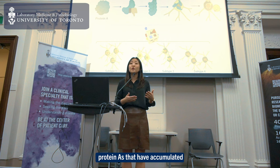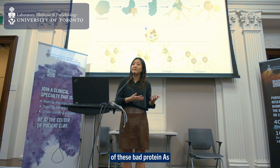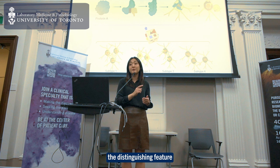Therefore, I measure the size of these bad protein A's that have accumulated inside the brain cells of multiple system atrophy patients. Using artificial intelligence as a shape sorting cube, I have sorted the different sizes of these bad protein A's into different groups.